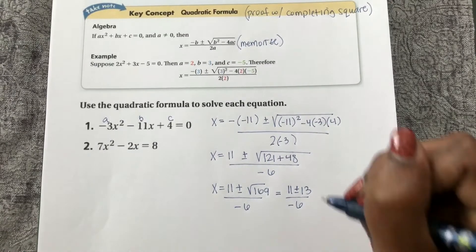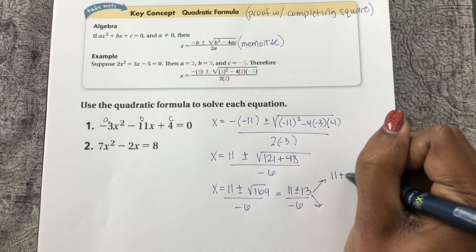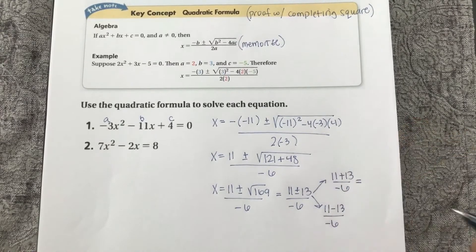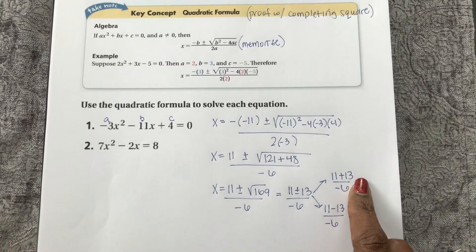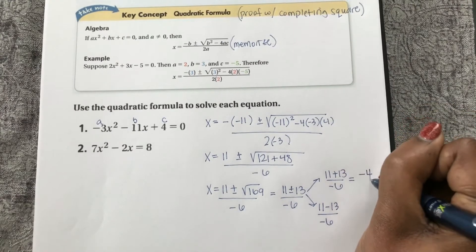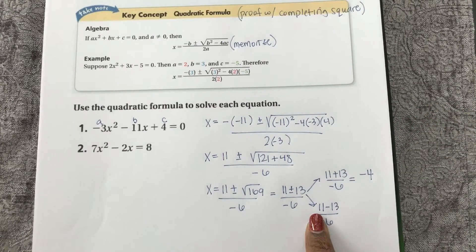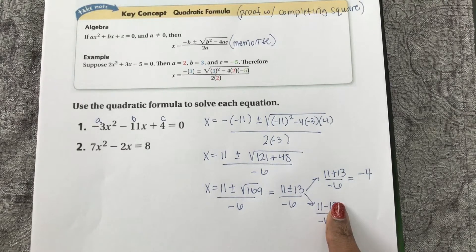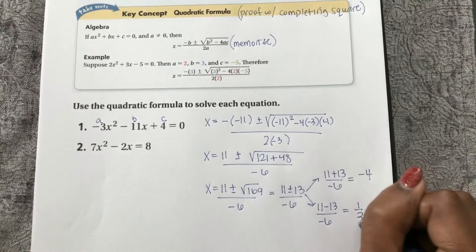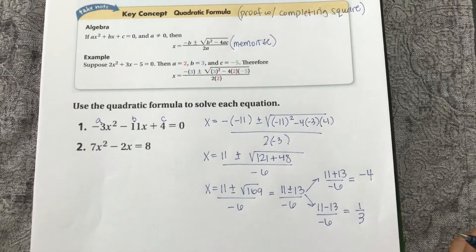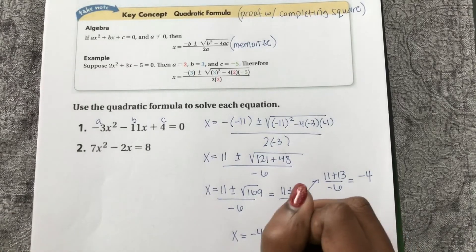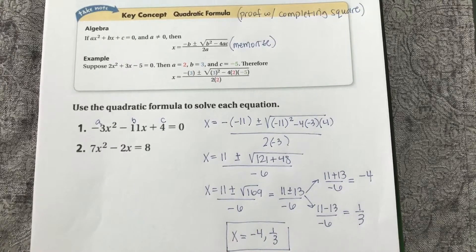Now we can split this up into two answers. 11 plus 13 divided by negative 6, and 11 minus 13 divided by negative 6. Well, 11 plus 13 is 24 over negative 6, which is negative 4. And 11 minus 13 is negative 2 over negative 6, which is 1 third. So x equals negative 4 or 1 third using the quadratic formula.